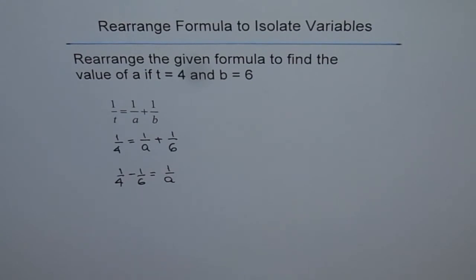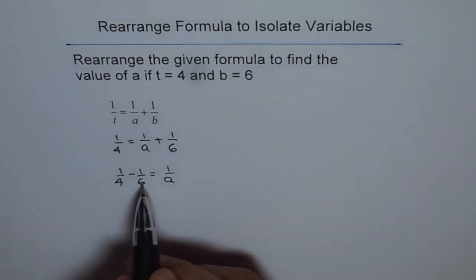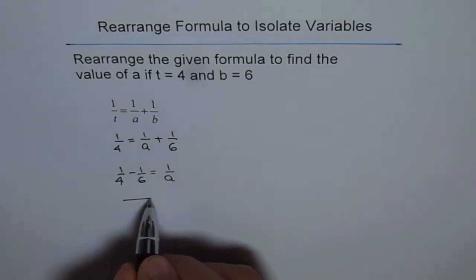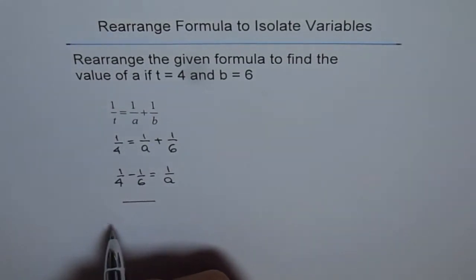Now we can take a common denominator and do this subtraction. We will take away 1 over 6 from 1 over 4. The common denominator for 6 and 4 is 12.